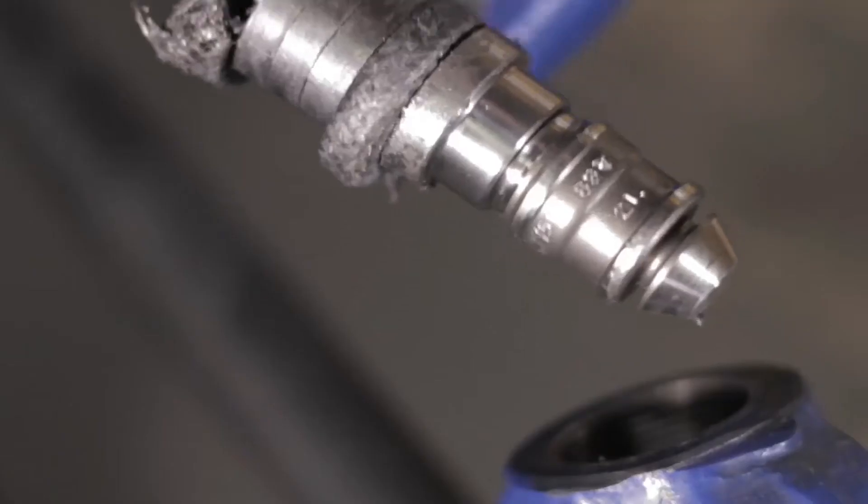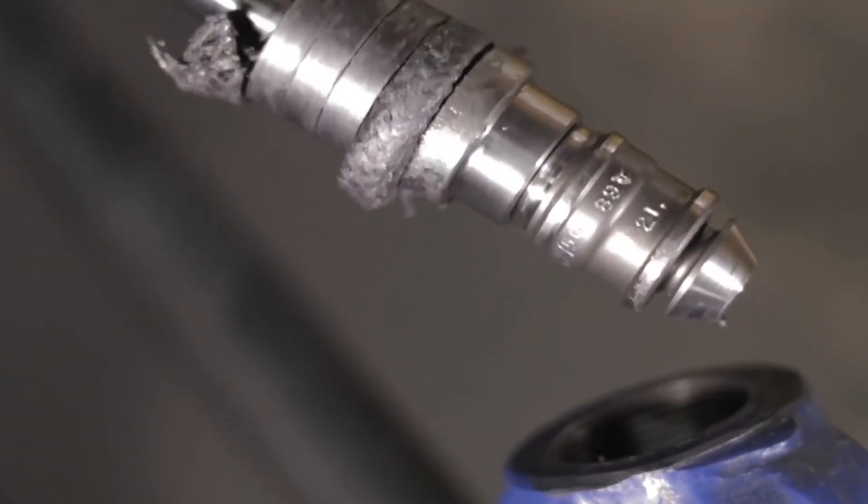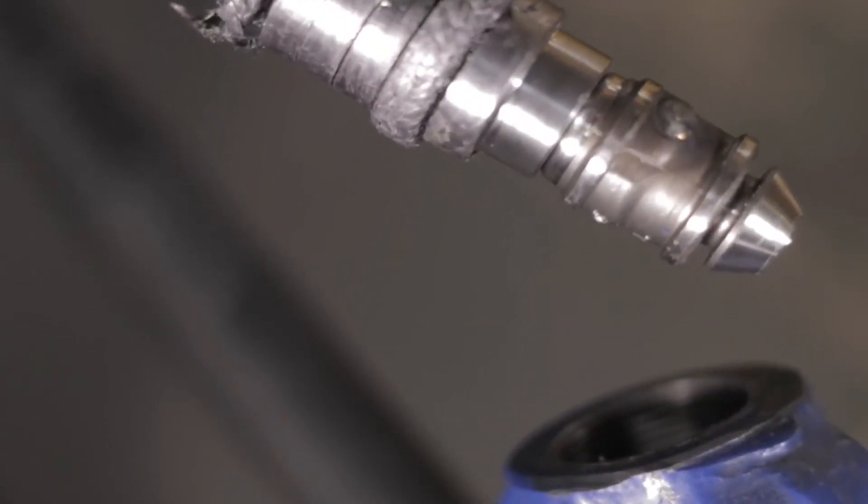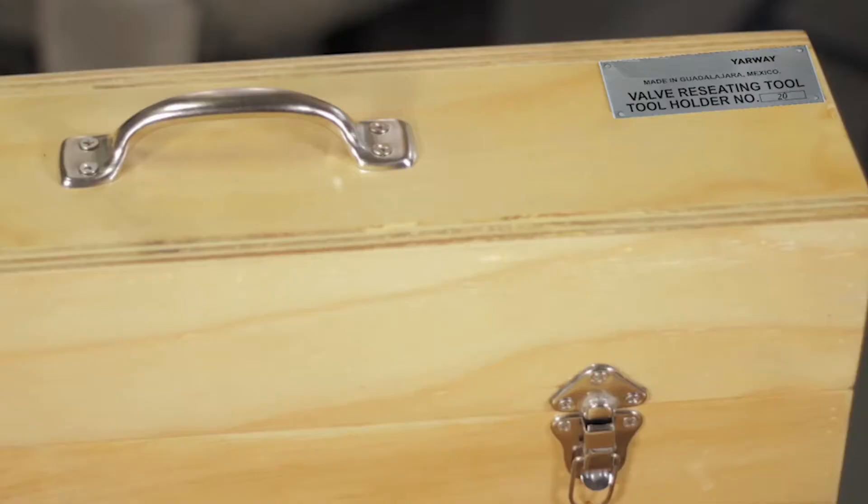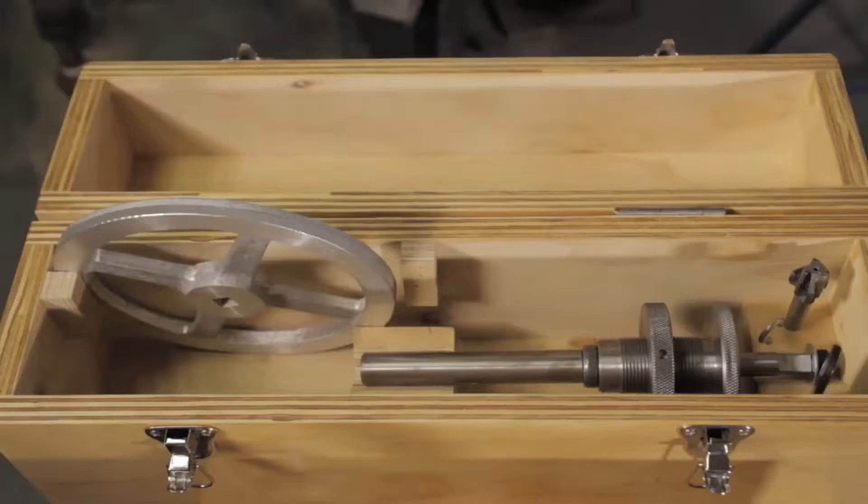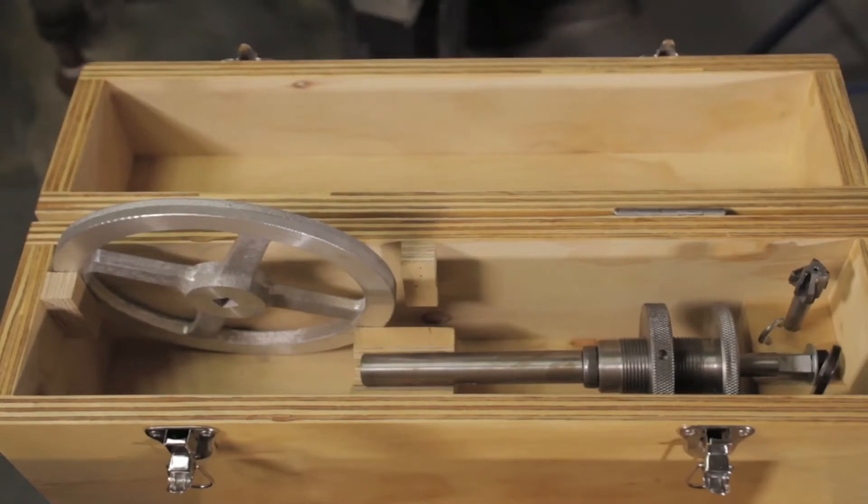By unscrewing the stem and yoke bushing, the packing can be easily removed from the valve. Discard the old packing and replace it with new. Now you are ready to cut a new seat.